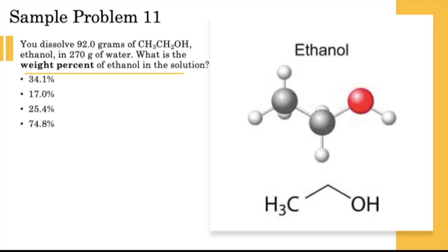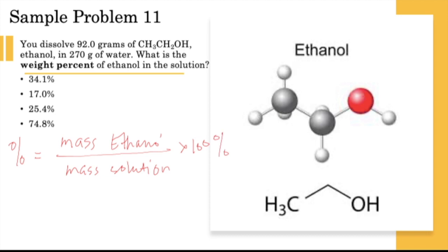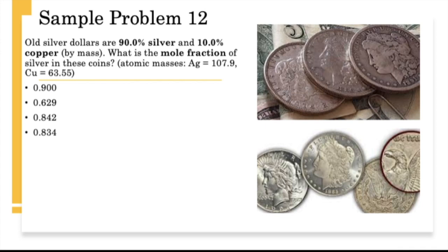Sample problem 11: Compute the weight percent of ethanol in the same solution. Weight percent = (mass of ethanol ÷ mass of solution) × 100% = (92 ÷ (92 + 270)) × 100% = 25.4%.